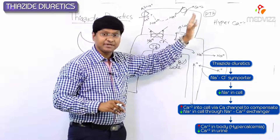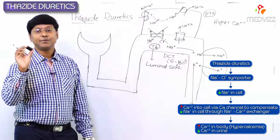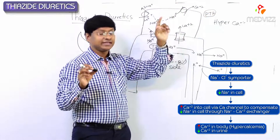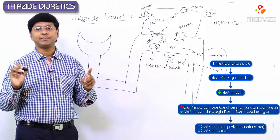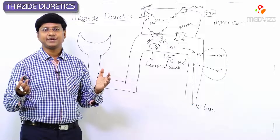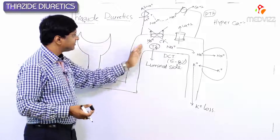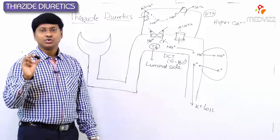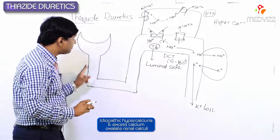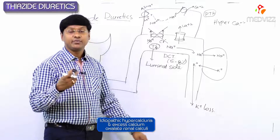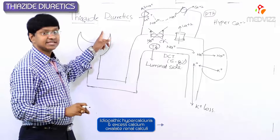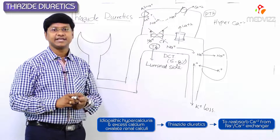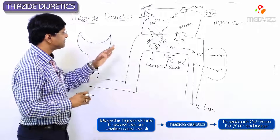This principle is used in the treatment of idiopathic hypercalciuria. In idiopathic hypercalciuria, more and more calcium is filtered and excreted out, leading to calcium oxalate stone formation. So in individuals with idiopathic hypercalciuria and excess calcium oxalate stones in the kidney, we give thiazide diuretics because they cause reabsorption of calcium via the sodium-calcium exchanger.